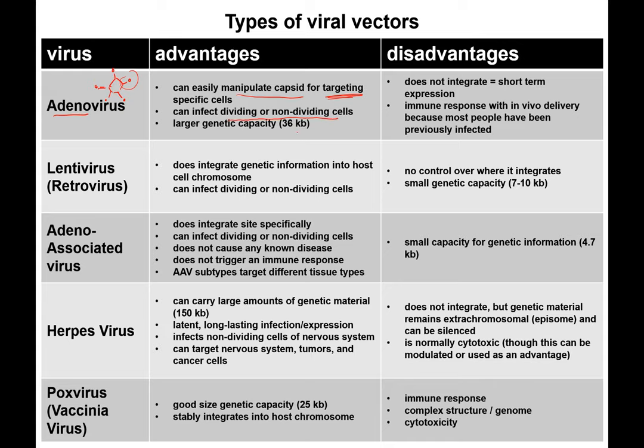Adenovirus has a very large genetic capacity. Human genes come in various sizes, from a few hundred base pairs to thousands and thousands of base pairs. The capacity of what transgene these viruses can carry really varies among different viruses, which makes sense when you consider the different sizes of viral genomes.